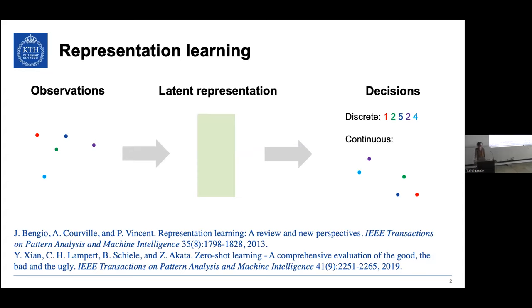Zeyna Pakata here in Tübingen does a lot of work on this. She has shown convincingly how you can learn representations that are factorized in such a way that you can recognize unseen combinations of classes and properties, since you have learned compositional models of the world in such a way that you can reason about them and come up with new combinations of what you have seen before.